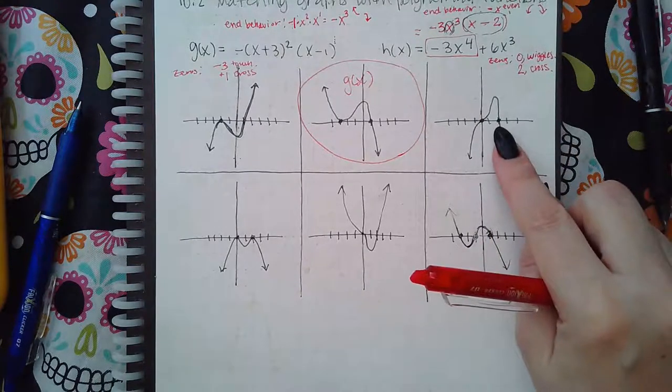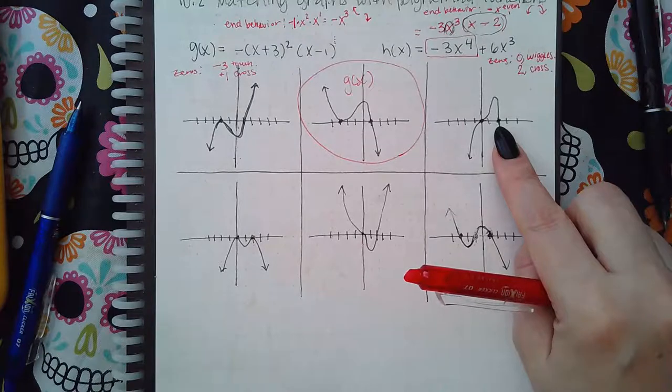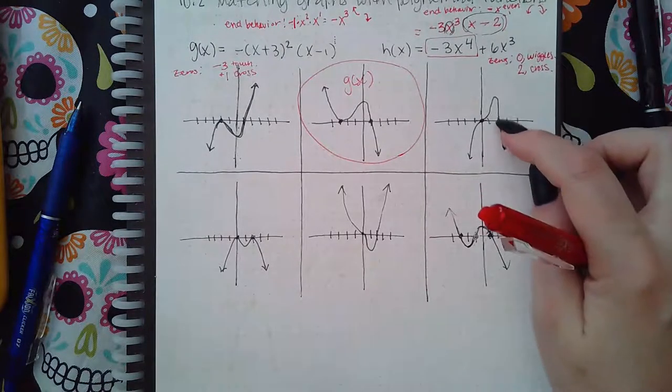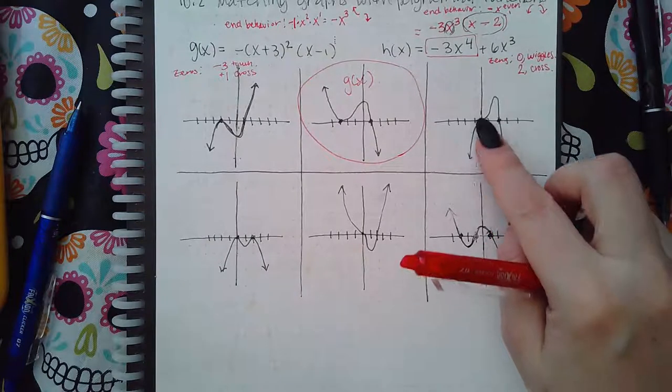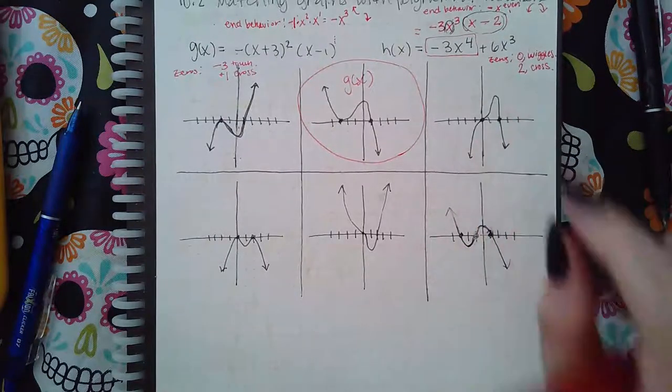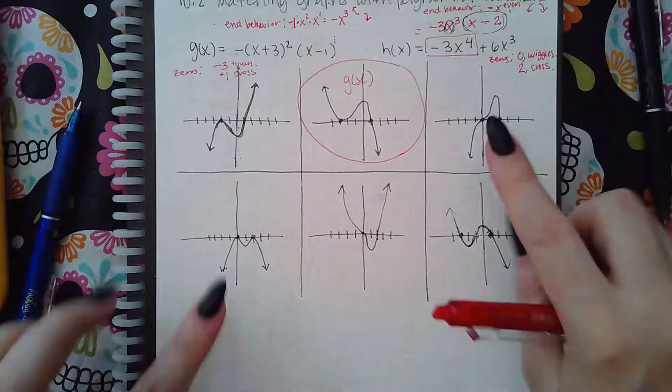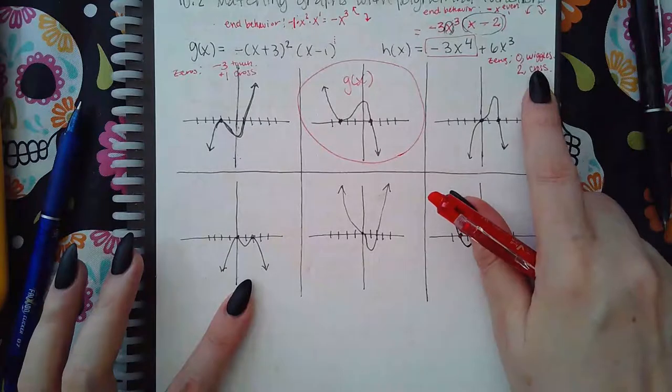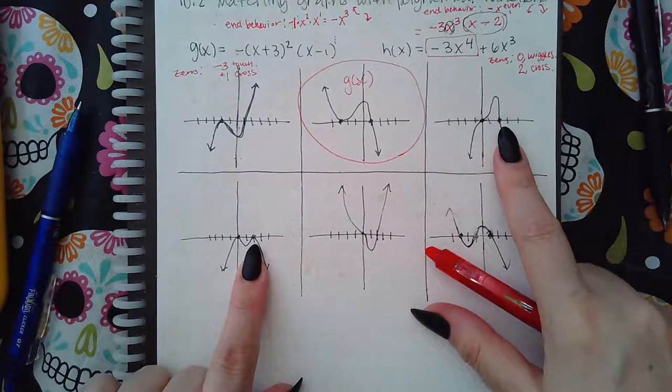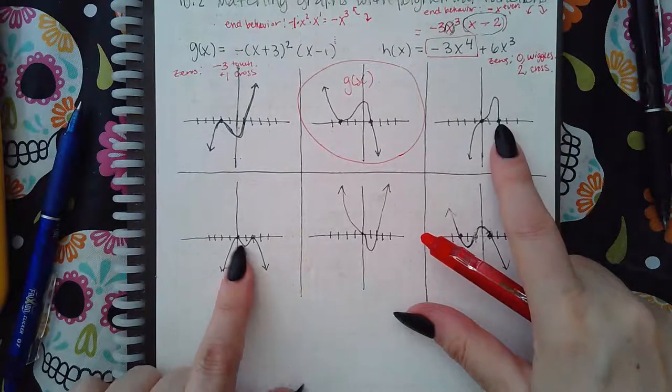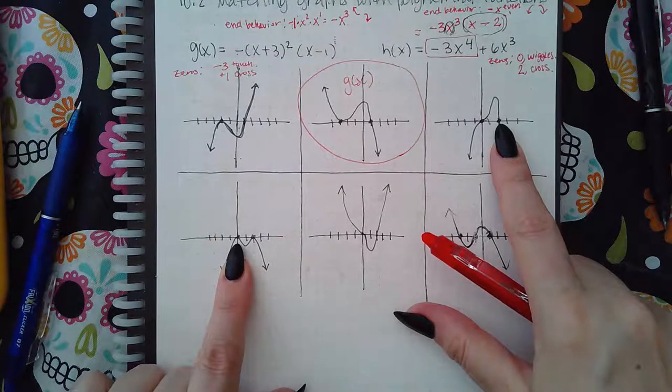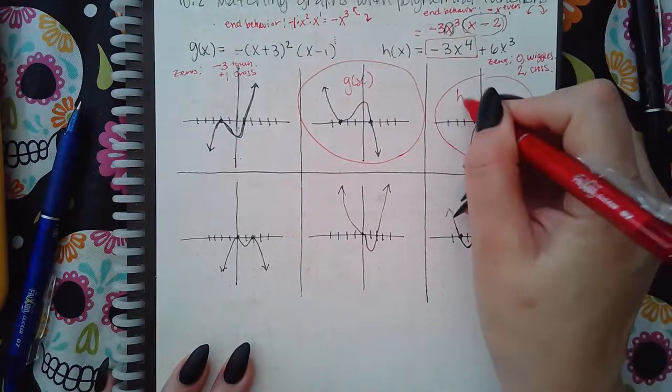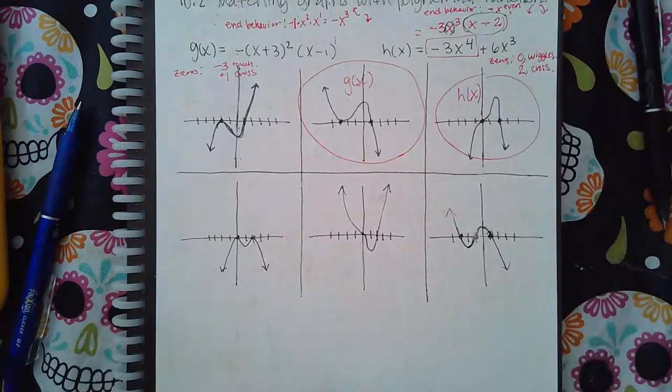And when it goes straight through, notice that it's not changing concavity. It just looks like the tail end of a downward parabola. It's just going down, down, down. It doesn't do any little weird squiggle in there or wiggle. So between these two graphs, I'm supposed to be wiggling around zero and crossing through two. This one doesn't cross through two, but this one does. This one doesn't wiggle through zero, but this one does. So this is going to be the answer for h of x.